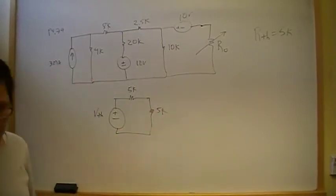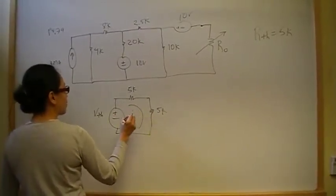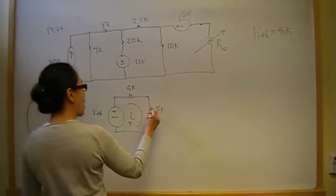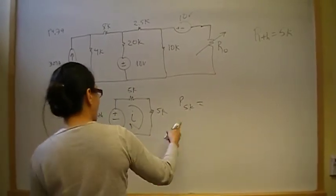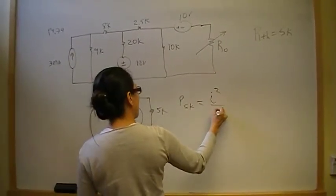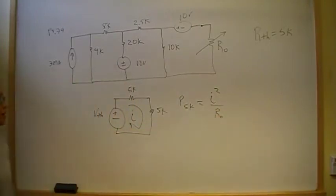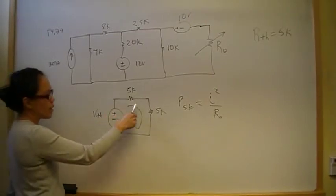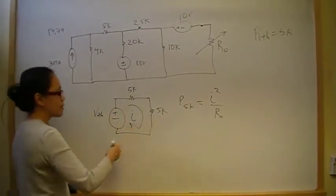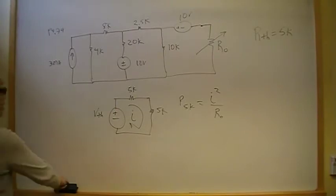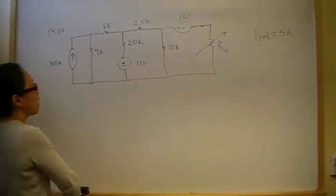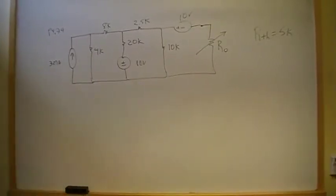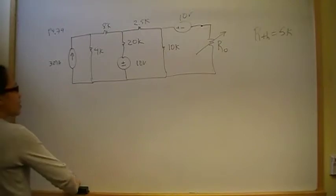The maximum power delivered is P = I²R, where I is the current through R-naught, the 5k. So we need V-Thevenin. To find it, I'll use the mesh method — you could also use the node voltage method. To find V-Thevenin we open the load.